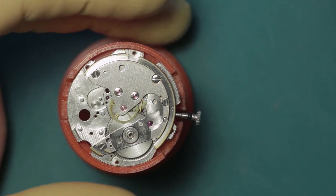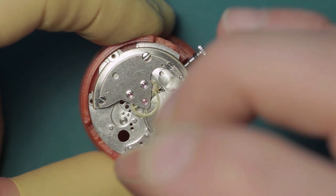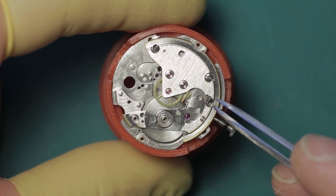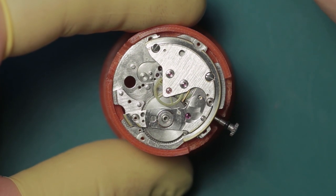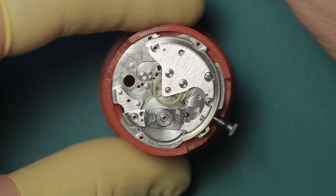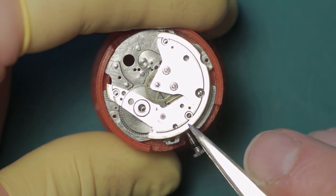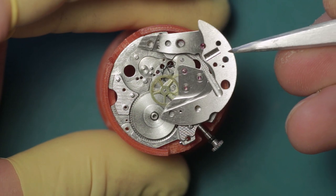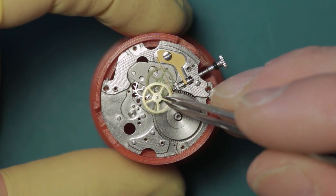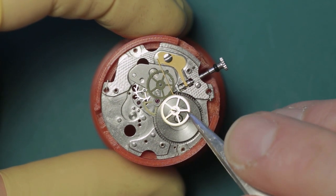We can go ahead and remove the train and barrel bridge combined. It's held by three screws. There we go. Nice and clean, looks good.